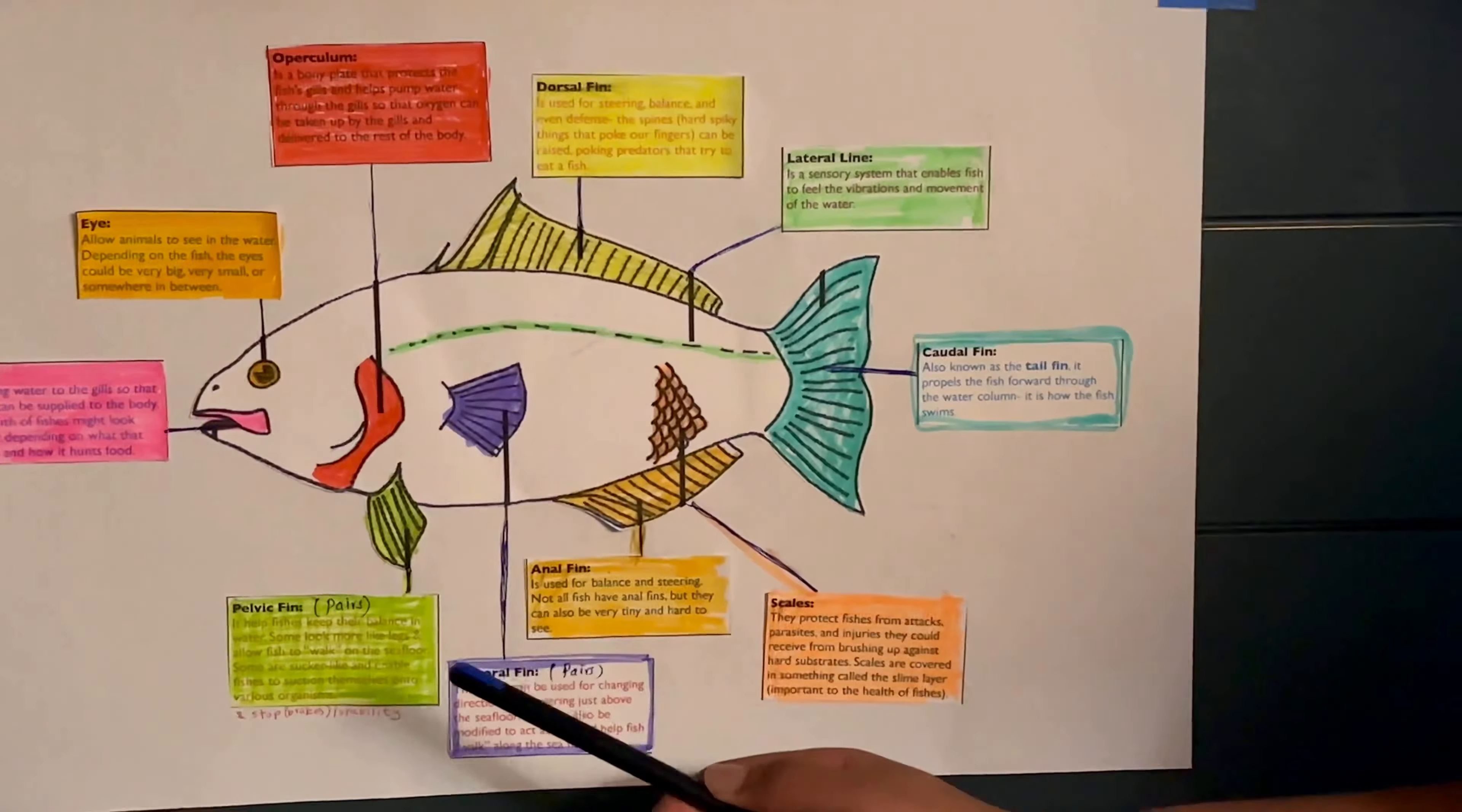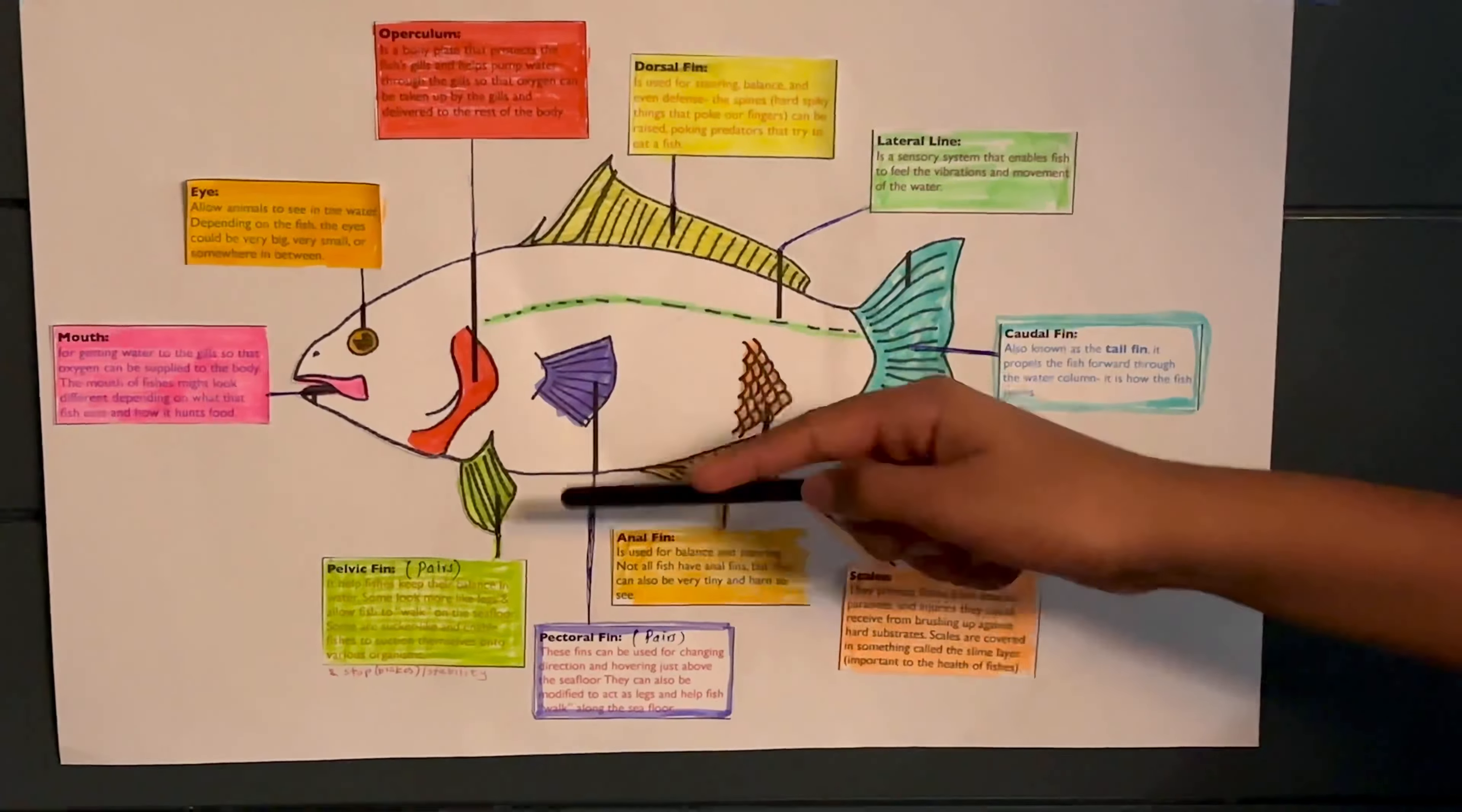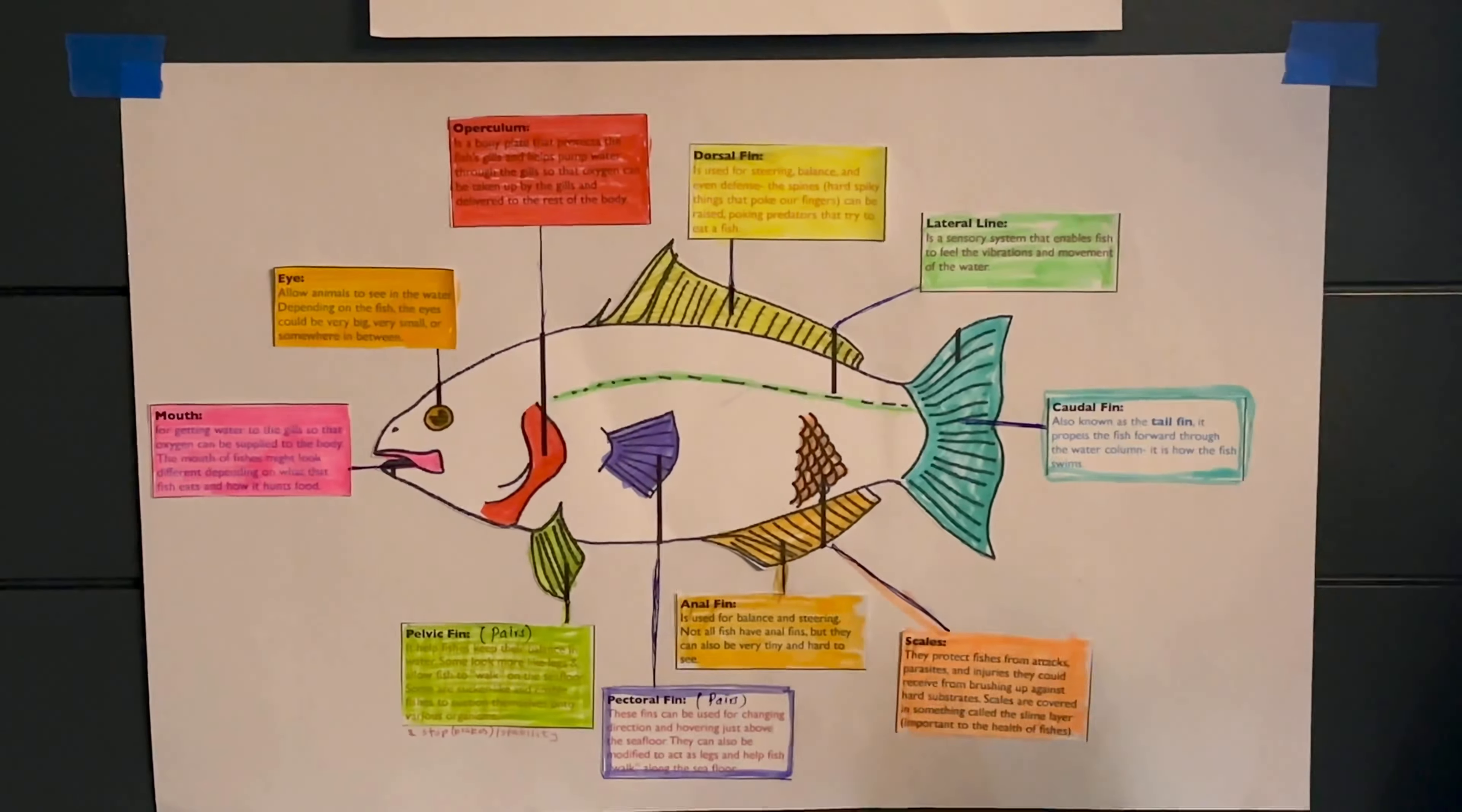Also, pelvic fins and pectoral fins come in pairs. When we look at the lateral point we only see one of them but on the other side there's another pair, so it creates one pair.